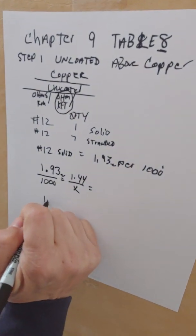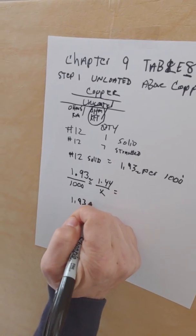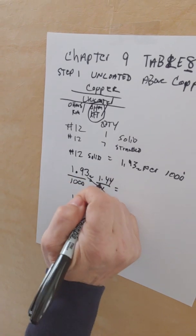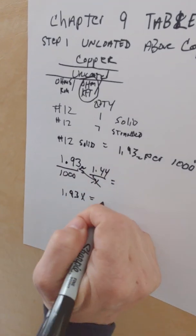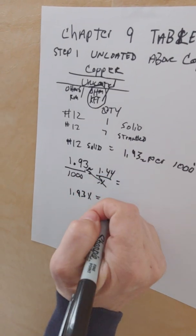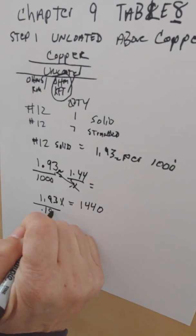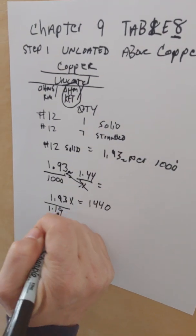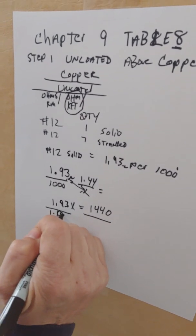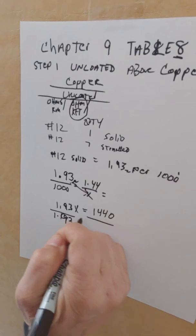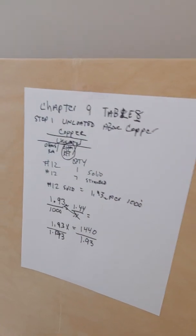We cross multiply. 1.93 times x equals one thousand times 1.44, which is 1440. We divide by 1.93, because we're going to get x by itself. What we do to one side we got to do to the other.